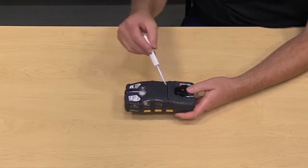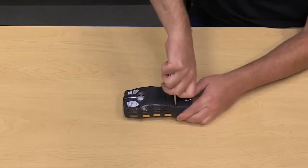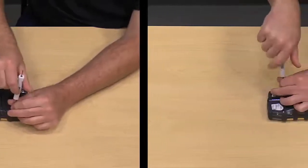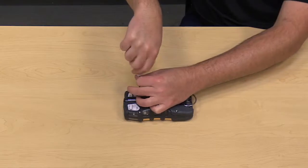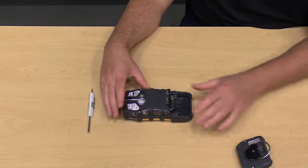As we flip the gas detector over, there are four screws to remove on the back of the gas detector. Once we've loosened these screws, we can first remove the battery pack and set that aside.